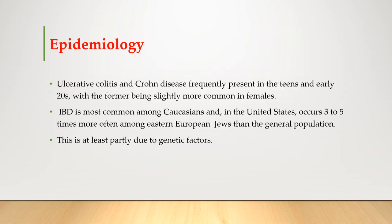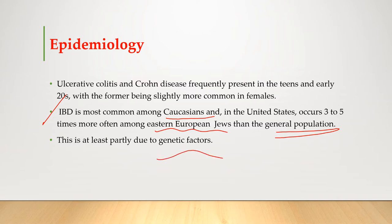Regarding epidemiology of inflammatory bowel diseases, both ulcerative colitis and Crohn's disease frequently present in the teens and early twenties, with ulcerative colitis being slightly more common in females. IBD is most common among Caucasians, and in the United States it occurs three to five times more often among Eastern European Jews than the general population, mainly due to genetic factors.